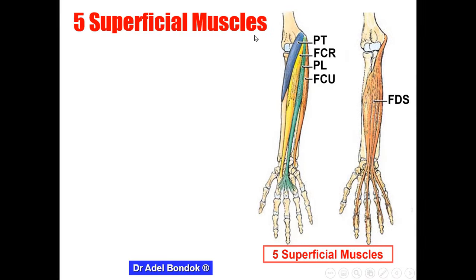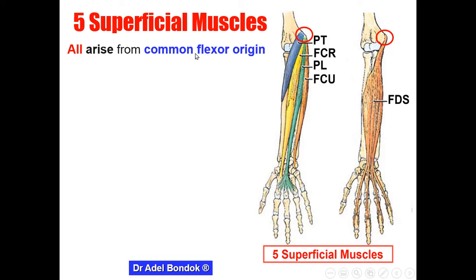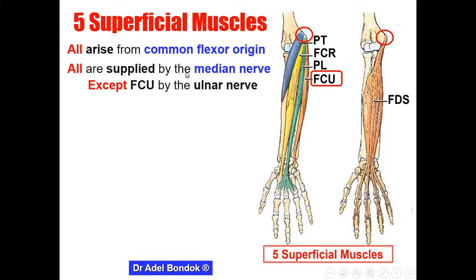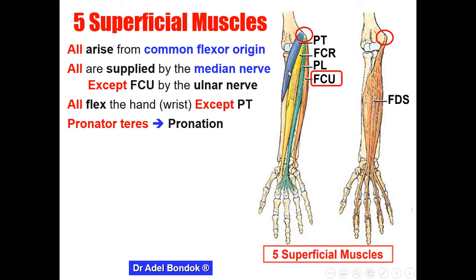Regarding the five superficial muscles and their origin: all of them arise from the common flexor origin, which is the front of the medial epicondyle. All five muscles are supplied by the median nerve, except flexor carpi ulnaris, which is supplied by the ulnar nerve. All of them act on the wrist joint, except pronator teres, because it does not cross the wrist joint. The action of pronator teres is pronation of the forearm.